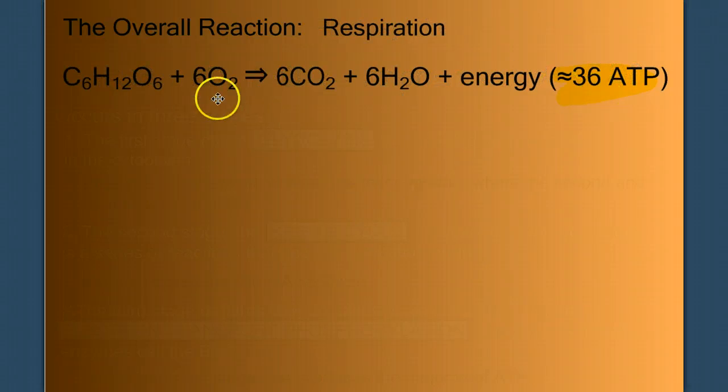We're going to get the energy back out of glucose in a form called ATP. So when we look at this overall equation, we're taking glucose in the presence of oxygen, and we're going to break it apart into carbon dioxide and water to liberate energy in the form of ATP, approximately 36 of them.